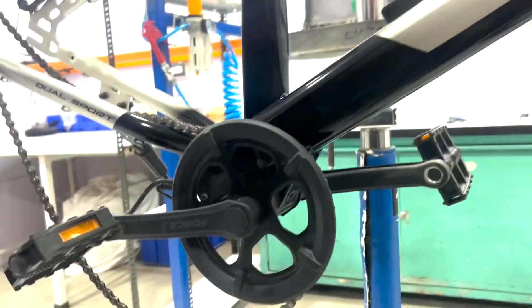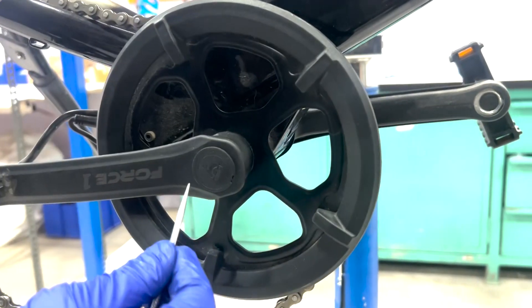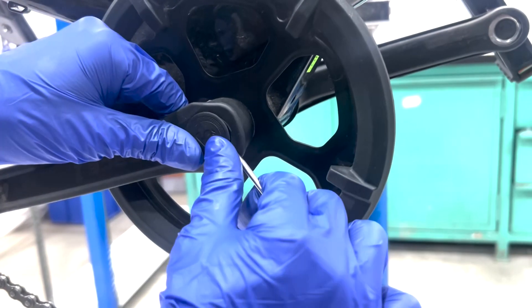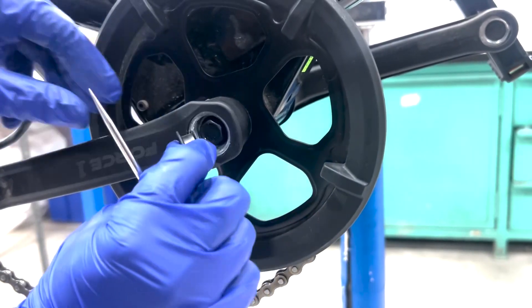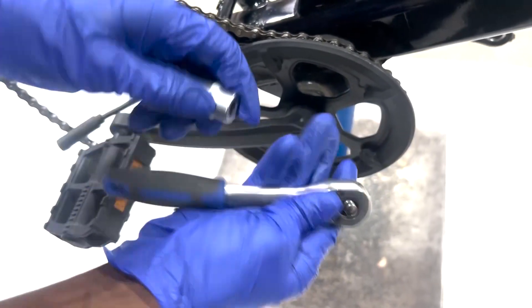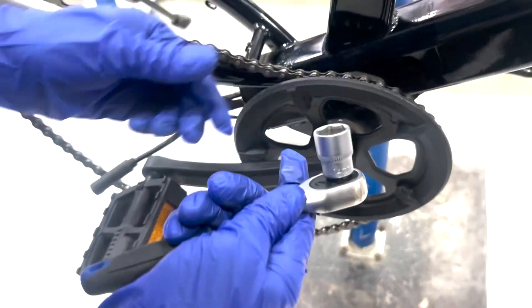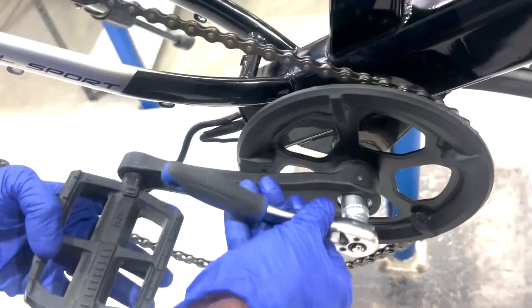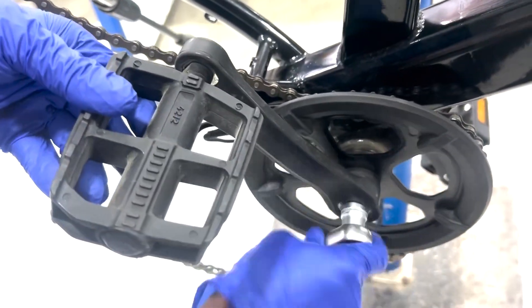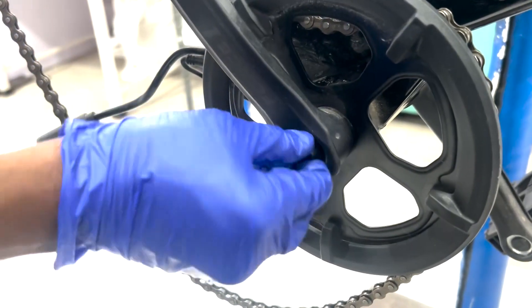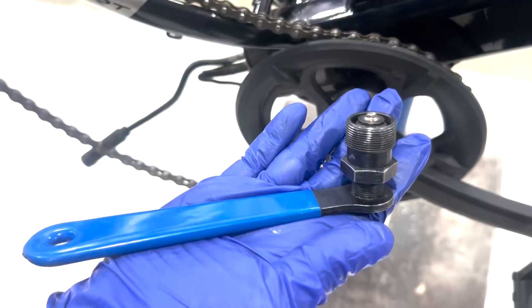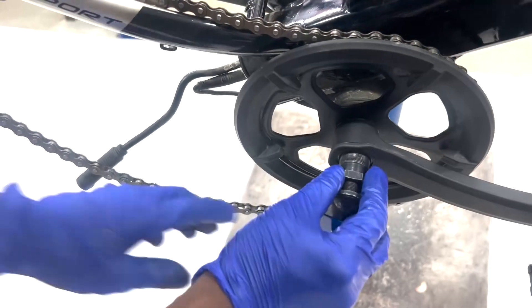Next, we'll remove the right side crank. Start by removing the crank bolt cap using a pick tool. Remove the crank bolt using a 14mm socket and ratchet, turning the crank bolt counterclockwise. Then use the crank puller to remove the crank.